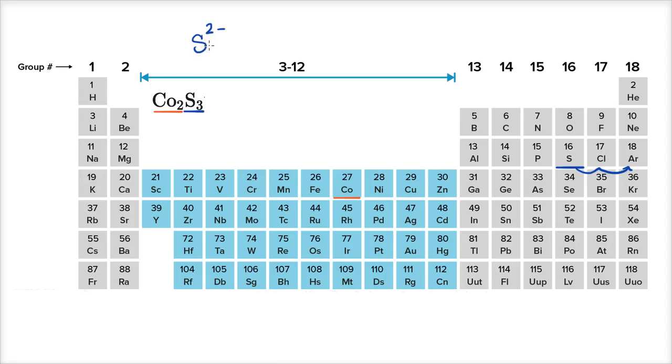So we can use this as a clue to figure out what must be the charge on the cobalts. Because we have three of the sulfides, each of the sulfides has a two minus charge. And we have three of them. So that's going to give us a six minus charge all in.